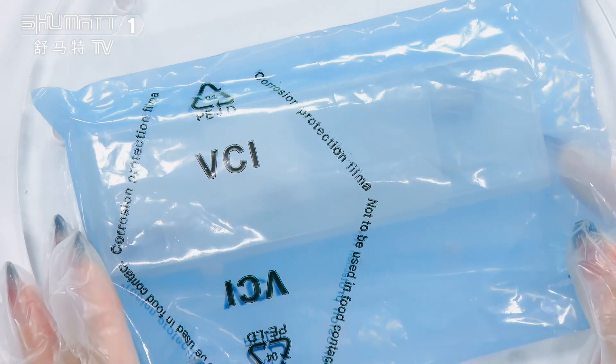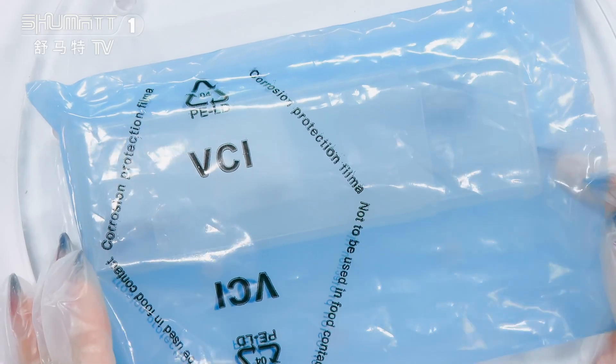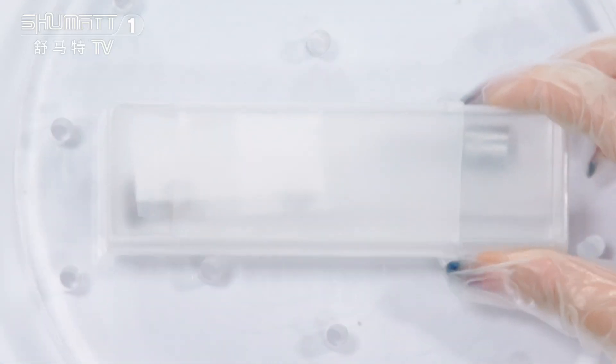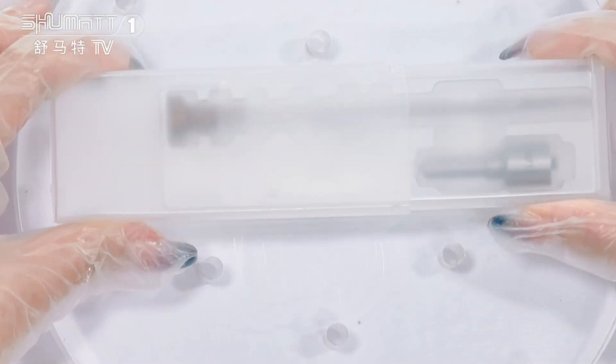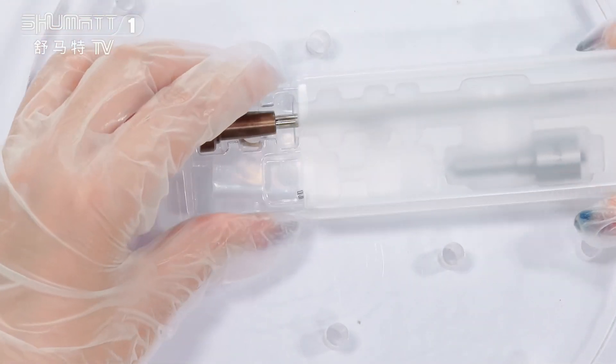Now let's see. This is the packing and the blue VCI anti-rust bag. Actually, we support customized service of the logo or label packing, etc. This is the inside product, take a look.